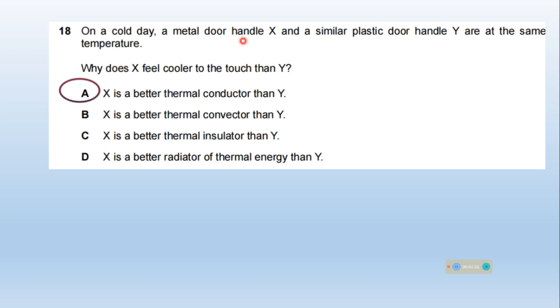On a cold day, a metal door handle X and a similar plastic door handle Y are at the same temperature. Why does X feel cooler to the touch than Y? Because X is a metal door handle and Y is a plastic door handle. So X is a better thermal conductor than Y. So option A is right here.